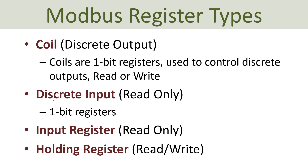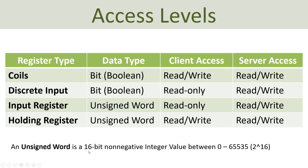In Modbus, we have four different types of registers: coils, discrete input, input registers, and holding registers. Coils and discrete inputs are the data type boolean or bit, so these are true or false values, or zero or one.